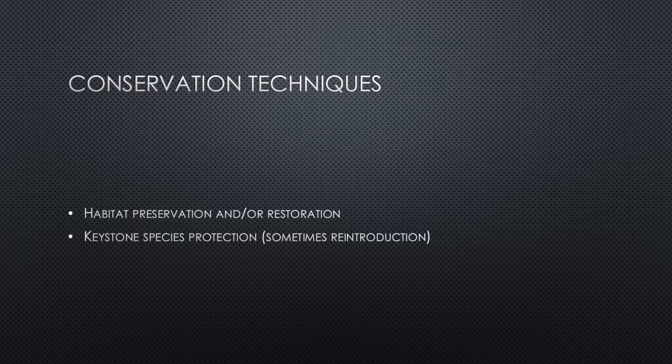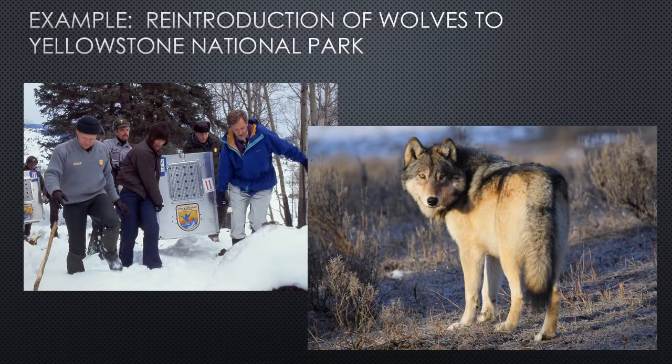We've discussed ways that damage populations and lead to extinction. Conservation techniques include correcting over-exploitation, pollution reduction through legislation, habitat preservation and restoration, and keystone species protection. Let's look at the example of reintroducing wolves to Yellowstone National Park — they are a keystone species — and what their story is.